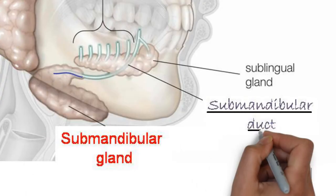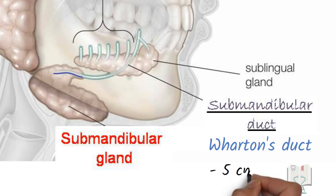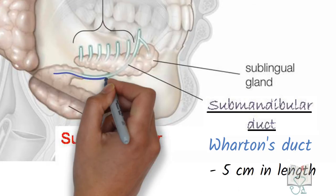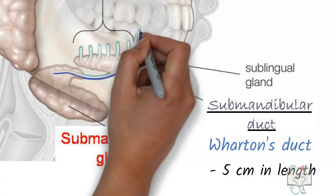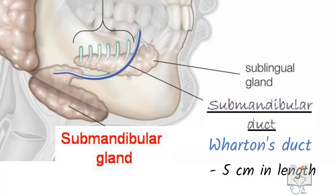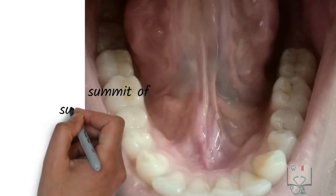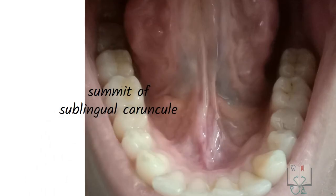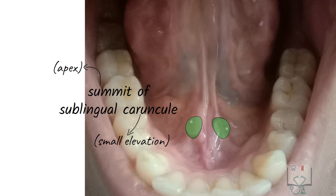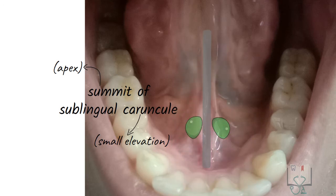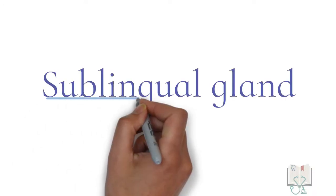The main excretory duct of the submandibular gland, called the submandibular duct or Wharton's duct, emerges from the deep lobe. It is around five centimeters long, runs anteriorly and superiorly, and opens into the floor of the mouth. Its opening is on the summit of the sublingual papilla, on either side of the lingual frenum.